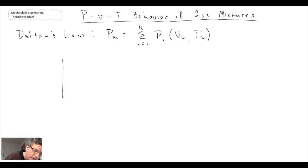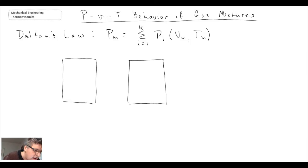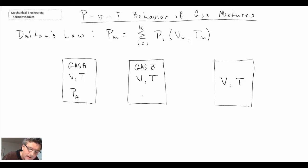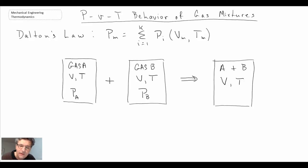Graphically we could illustrate it in this manner. Imagine we have two containers that are identical in size, and then we have a third container, again identical in size. We will assume that the volume and temperature of these containers are all the same. If in the first container we have gas A and in the second container we have gas B, and the pressure in container A is PA and the pressure with gas B is PB, if we were to combine these two gases together into the third container — keeping them at the same volume and temperature — what we would find is the pressure of the combined gases is going to be PA plus PB.